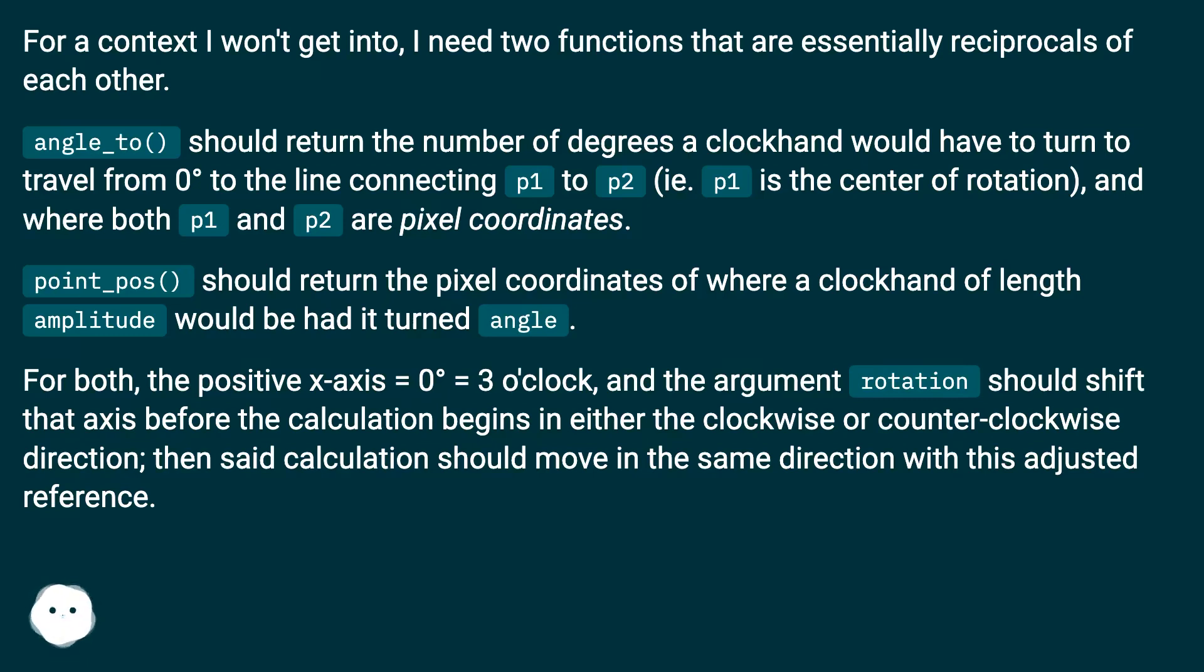p1 is the center of rotation, and both p1 and p2 are pixel coordinates. point_pos() should return the pixel coordinates of where a clock hand of length amplitude would be had it turned angle. For both, the positive x-axis equals zero degrees equals 3 o'clock, and the argument rotation should shift that axis before the calculation begins in either the clockwise or counterclockwise direction.